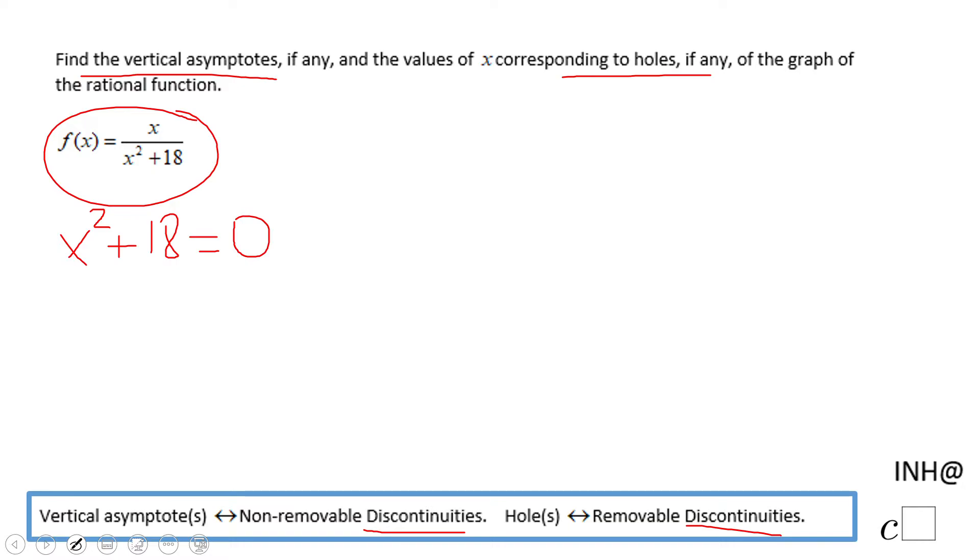In this case, if we look, there are no such values of x that will make this expression equal to zero. We have something squared, which can be zero or a positive number, and you add 18. So this expression is going to always be greater than zero. There's no way for it to be equal to zero.